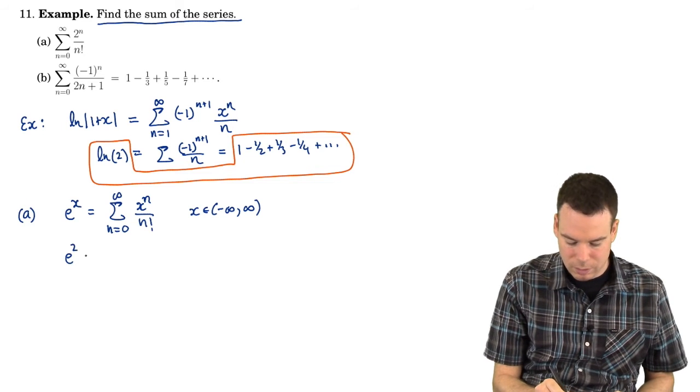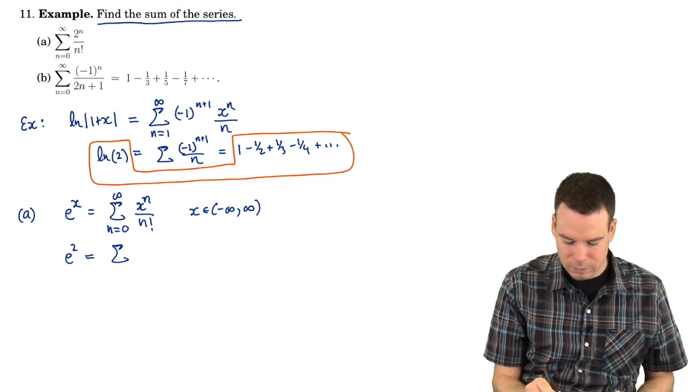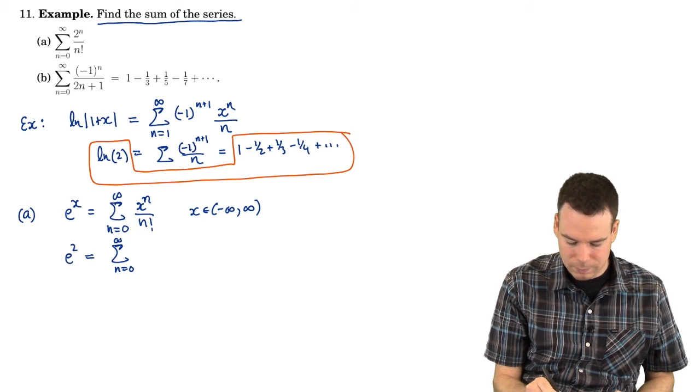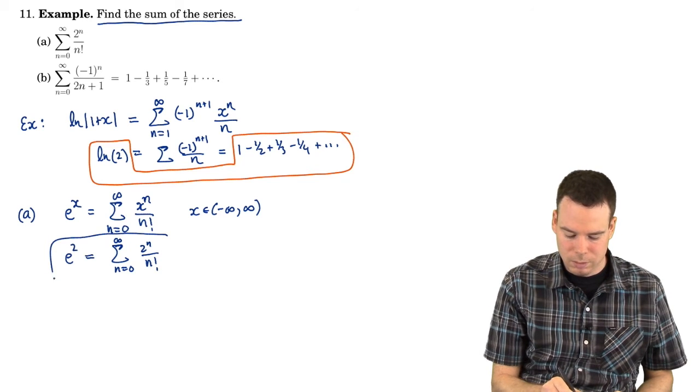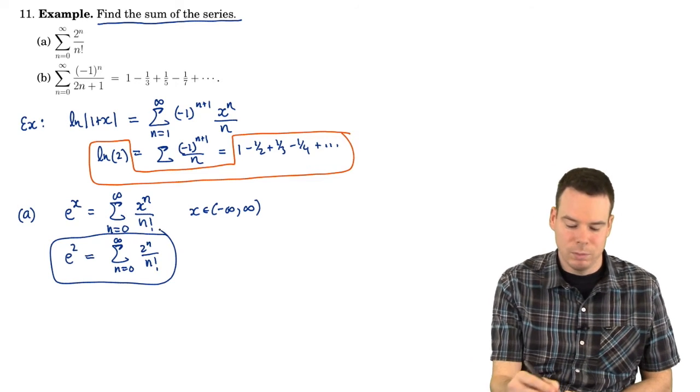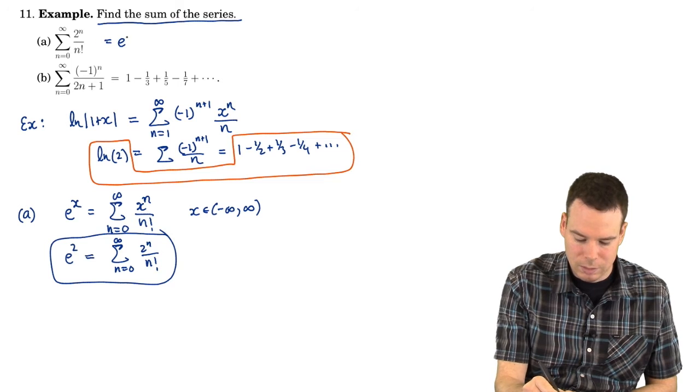So that means in particular I could plug 2 in and I get that this series converges to e to the 2. And there we go. We found the sum of the series. The sum of the series is e squared.